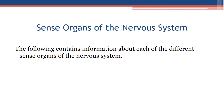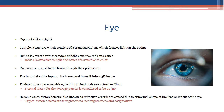Sense organs of the nervous system. Eye — organ of vision and sight: a complex structure consisting of a transparent lens which focuses light on the retina. The retina is covered with two types of light-sensitive cells: rods, which are sensitive to light, and cones, which are sensitive to color. The eyes are connected to the brain through the optic nerve, and the brain takes input from both eyes and turns it into a 3D image.